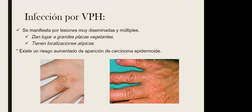La infección por VPH o virus del papiloma humano se manifiesta por lesiones muy diseminadas y múltiples. Son placas vegetantes que presentan necrosis y tienen localizaciones atípicas, aunque predominan sobre todo en manos y pies —llamadas verrugas vulgares—. Existe un riesgo de aparición de carcinoma epidermoide, relacionado principalmente con el VPH tipo 16, mientras que las lesiones benignas son comunes del VPH 6 y el VPH 11.